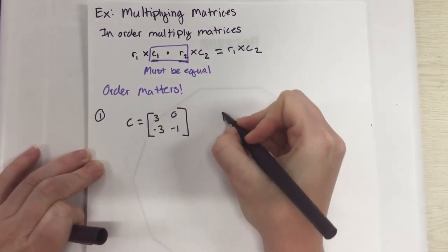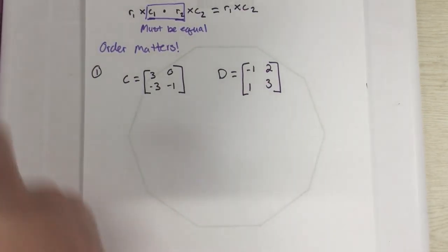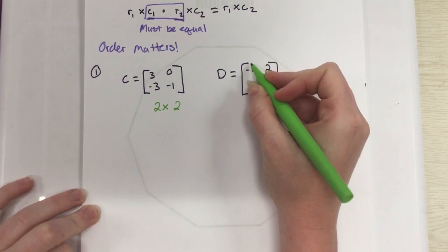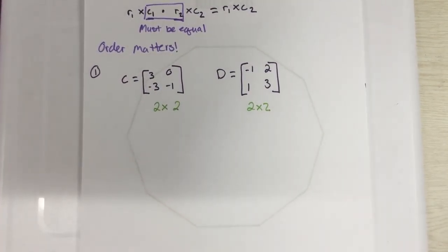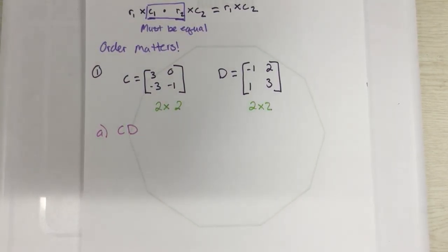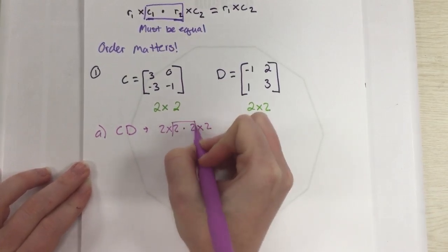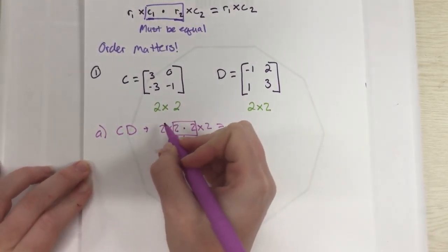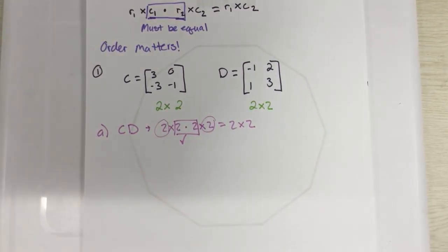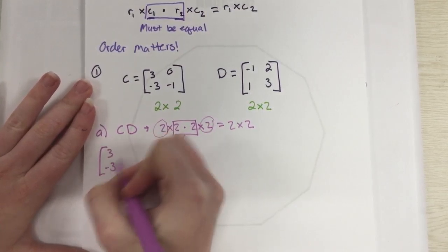The first problem: matrix C equals [3, -3; 0, -1] and matrix D equals [-1, 1; 2, 3]. Let's first identify rows and columns. C is two rows by two columns, and D is also two rows by two columns — they're both 2×2, which makes life really easy. We want to multiply C by D. So I have a 2×2 times a 2×2 — the inner values must be equal, and they are, so we're good. My answer will be a 2×2.